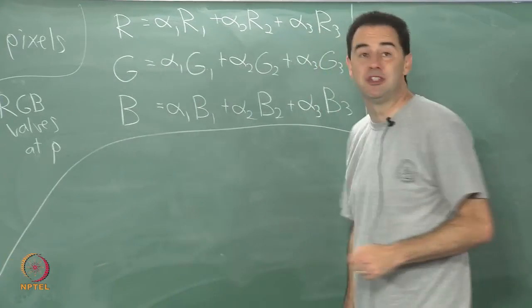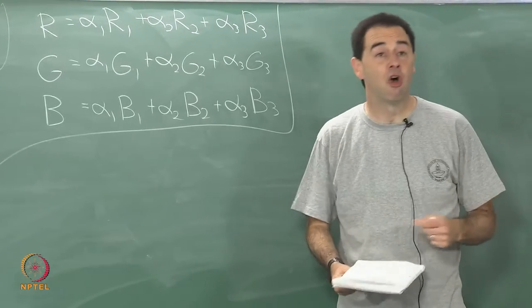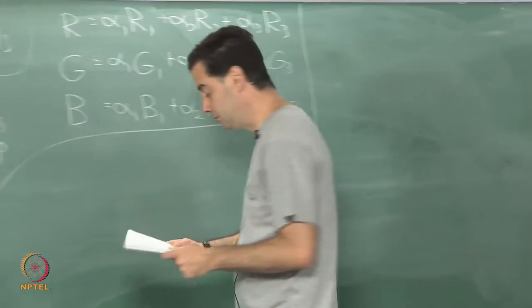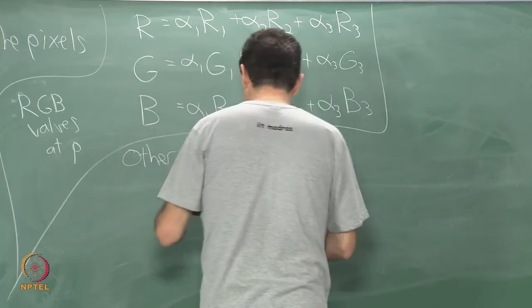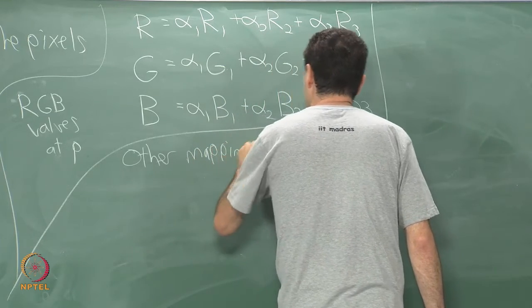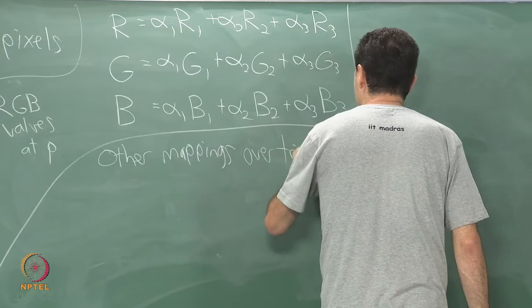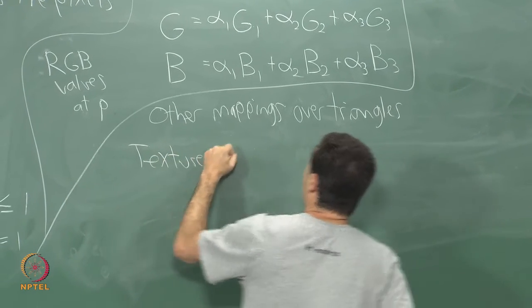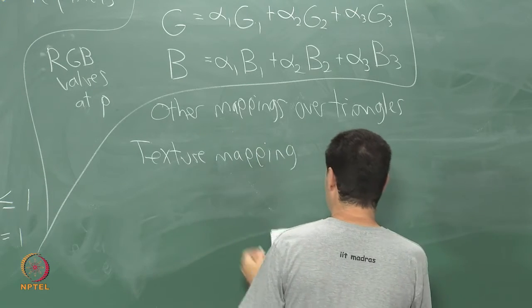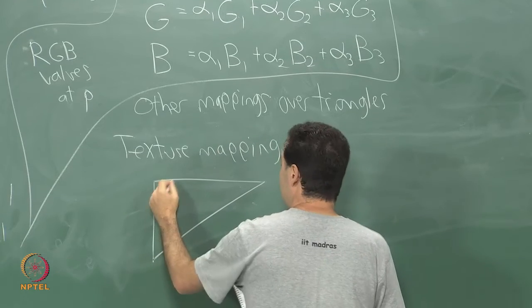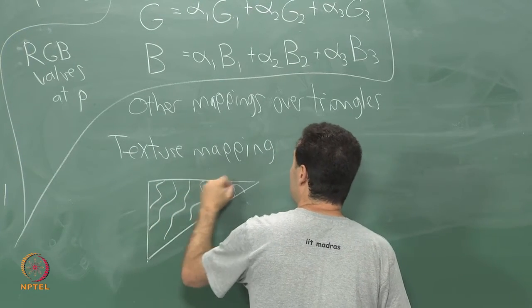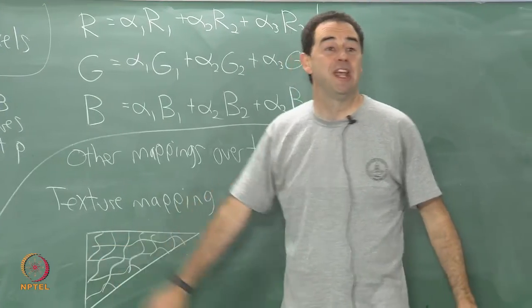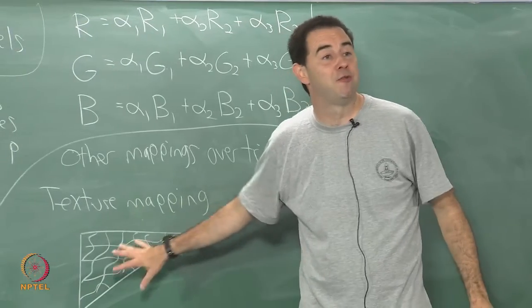There are other kinds of mappings you might want to do in addition to RGB. Let me give some other examples and then I will go into some of the specific problems that virtual reality causes for these types of techniques. One common kind of mapping is texture mapping. It may be the case that over my triangle I may have some kind of textured pattern that needs to appear.